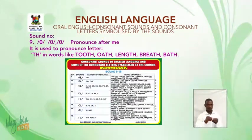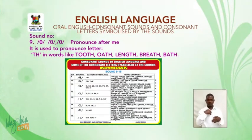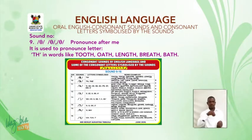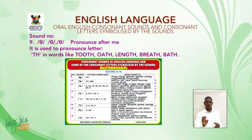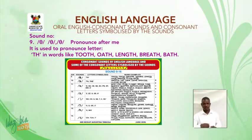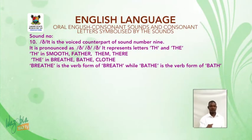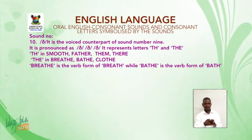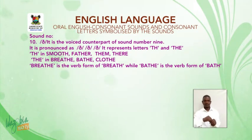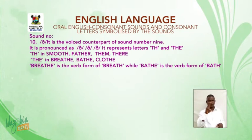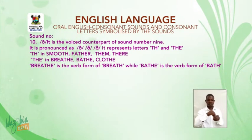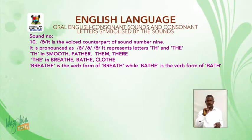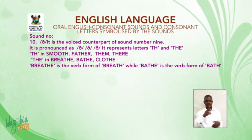Sound number nine: /θ/ (voiceless TH). It is used to pronounce letter TH in words like tooth, oath, length, breath, bath. Sound number ten: /ð/ (voiced TH). It is the voiced counterpart of sound number nine. It is pronounced as TH in smooth, father, them, the; and THE in breathe, bathe, clothe. Note: breathe is the verb form of breath, while bathe is the verb form of bath.